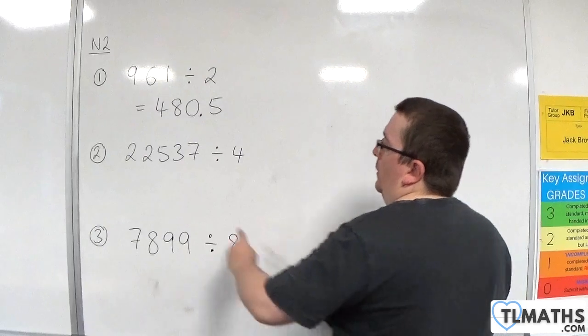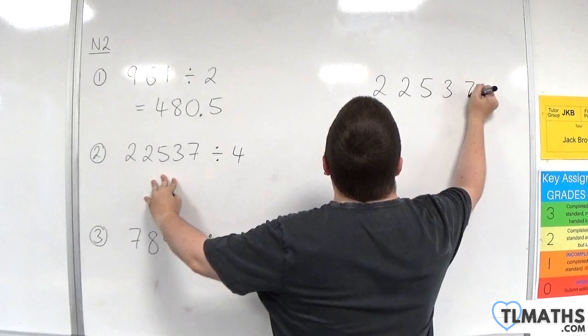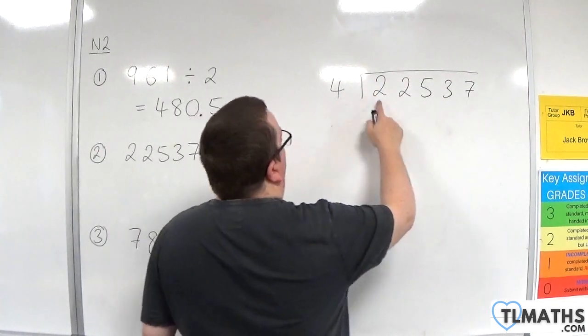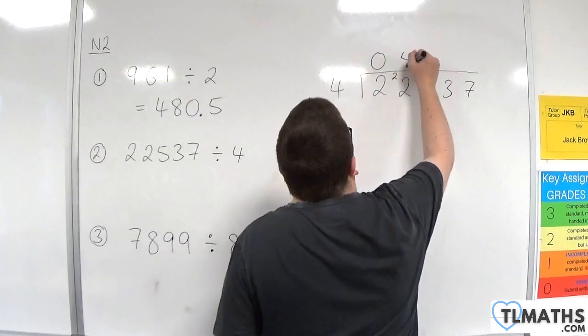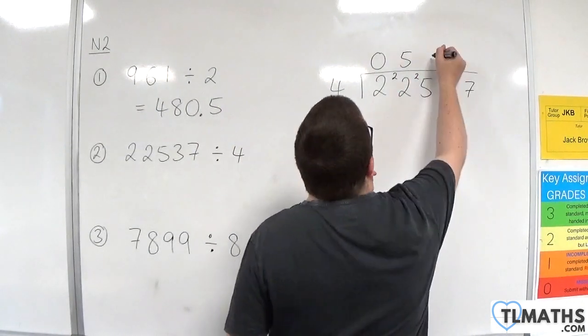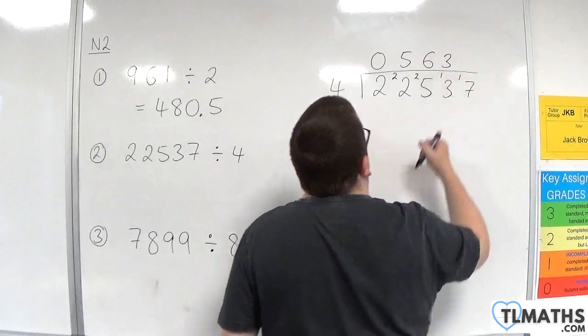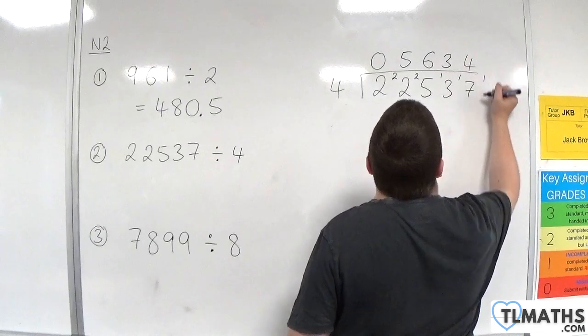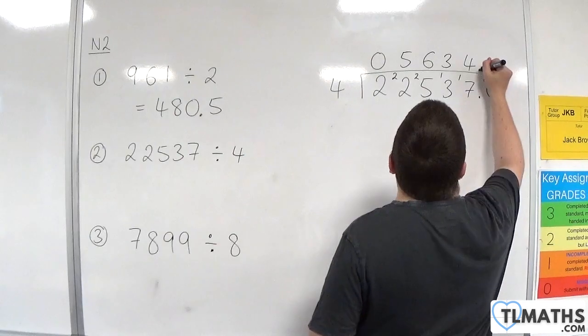Example number 2. We have 22,537 and we're going to divide that by 4. So 4's into 2 go 0 with 2 remainder. 4's into 22 go 5 with 2 remainder. 4's into 25 go 6 with 1 remainder. 4's into 13 go 3 with 1 remainder. And then 4's into 17 go 4 with 1 remainder. So we need to put in a 0 and decimal points.